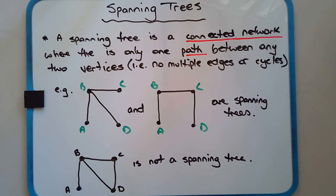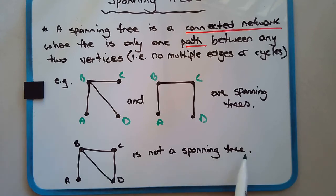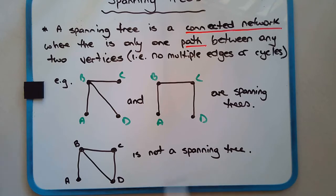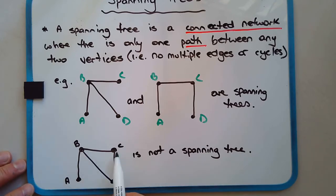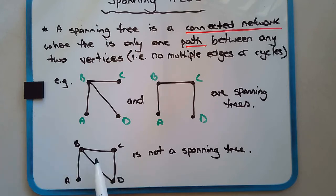This diagram at the bottom is not a tree and not a spanning tree. Why? Because there's a cycle — B, C, D — and that cycle stops it from being a tree. Yes, it's a connected network, but it's not a tree. And if it's not a tree, it can't be a spanning tree.